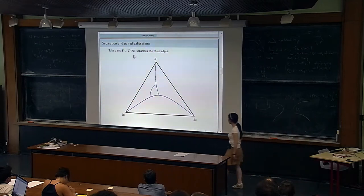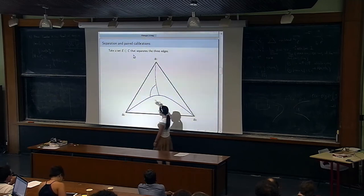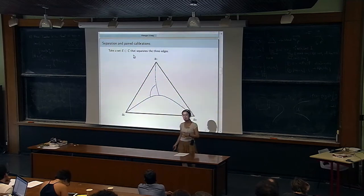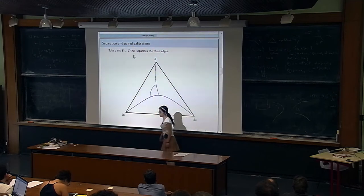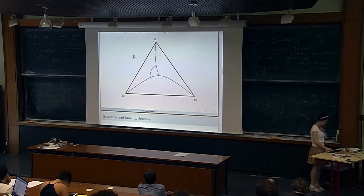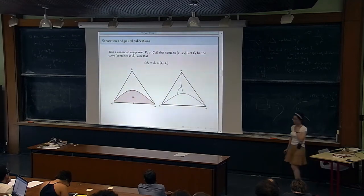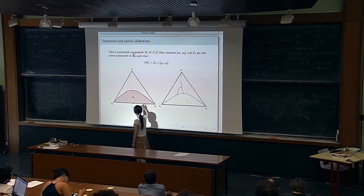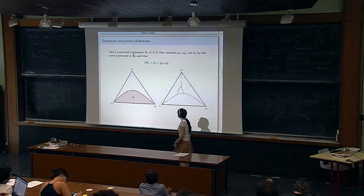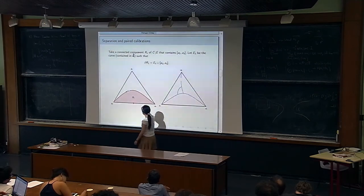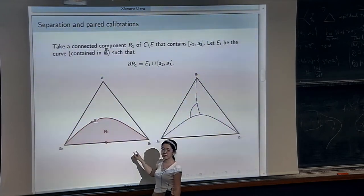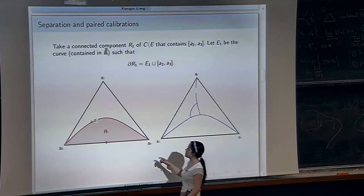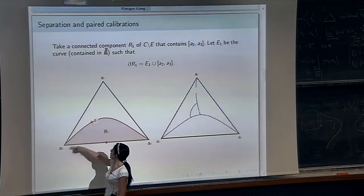We take a connected component of the complement of E — call it R1 — that contains the edge opposite to point A1. Let E1 be the boundary curve such that the boundary of R1 is the union of the edge and E1. We do the same for the edge opposite to A2, calling that component R2 with boundary curve E2. The last part is R3 with boundary E3. The union of the boundary sets is contained in E.